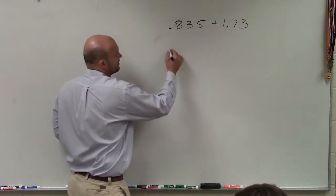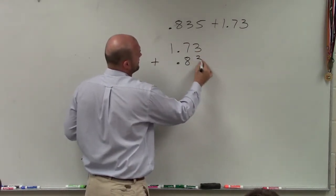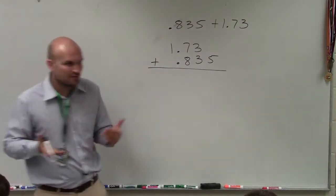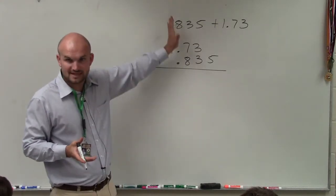So when we're adding, I'm going to add 1.73 plus 0.835. I prefer to use the vertical method when doing this. Make sure that the decimal points are aligned.